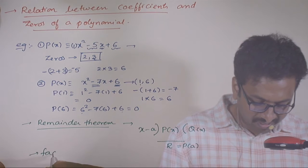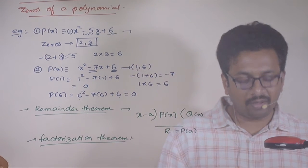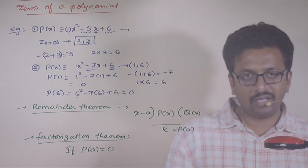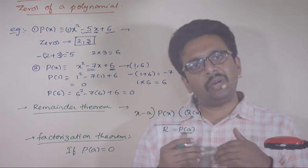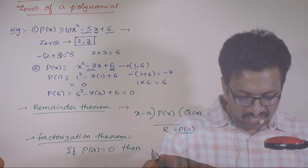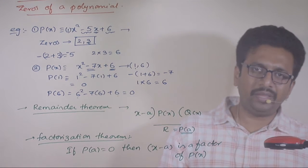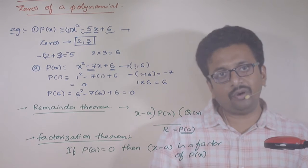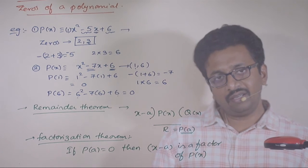So when a polynomial P of x is divided by x minus a, the remainder is P of a. This is called the remainder theorem. And what is the factor theorem? Factorization theorem says — it is like the converse of the remainder theorem — if P of a is equal to 0, that means the remainder is 0. When the remainder is 0, the divisor is a factor of the dividend. So if P of a is equal to 0, then x minus a is a factor of P of x.